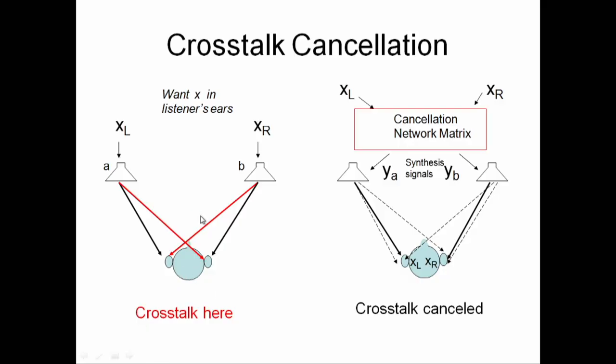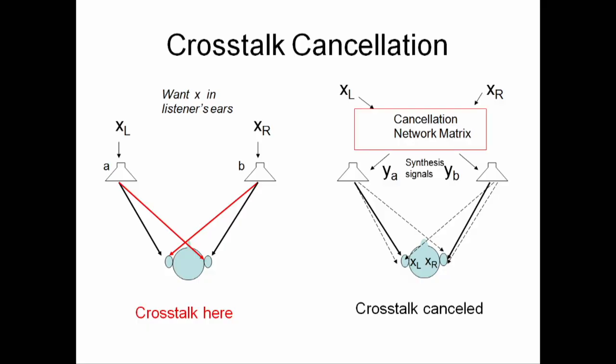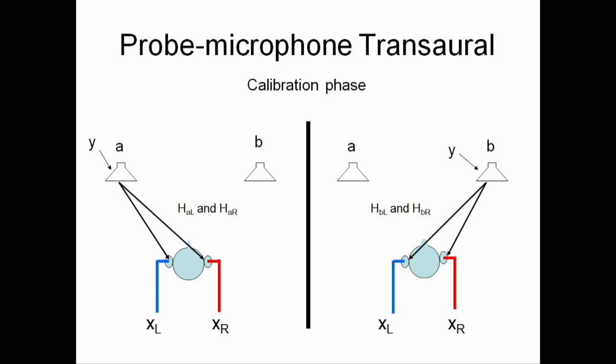Here's the idea. Imagine that we want signals XL in the listener's left ear and XR in the listener's right ear. If you send those signals to two loudspeakers, of course you will get crosstalk. The goal is to cancel that crosstalk. If you want signal XL in the listener's left ear, you send that signal to the cancellation network, which produces signals Y_A and Y_B to be sent to the A and B loudspeakers, and that will cancel the crosstalk and give you exactly what you want in the left and right ears. You start by measuring the transfer functions between each loudspeaker and the listener's left and right ears, ending up with a two-by-two matrix. You invert that matrix, and that's what you multiply by signal X to get signal Y.